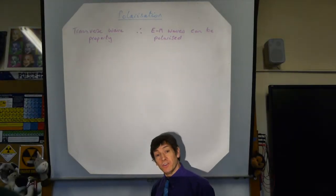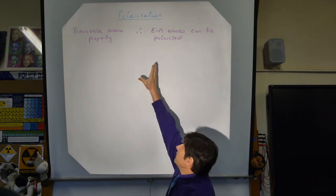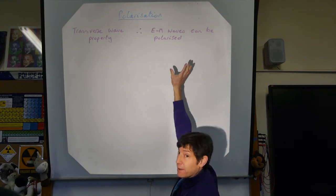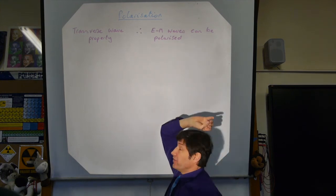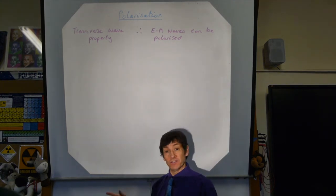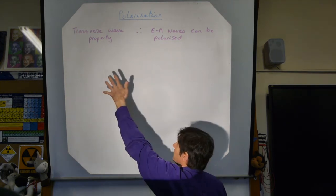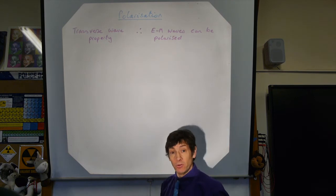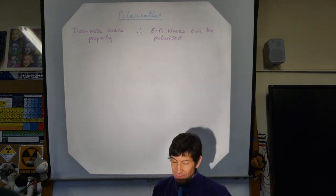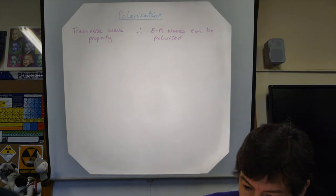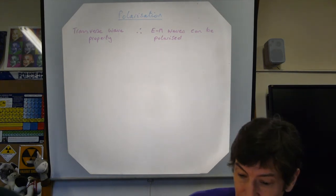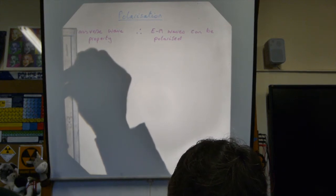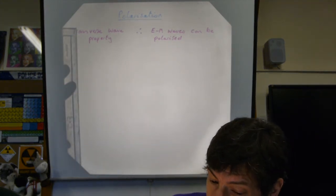What we're going to do now is a quick revision of polarisation. Electromagnetic waves can be polarised and therefore they must be transverse. Looking at it the other way around: transverse waves can be polarised, and if you can polarise electromagnetic waves, then they must be transverse. A quick reminder of what we mean by polarisation — then we'll look at polaroid filters and whether we can polarise other electromagnetic waves like radio waves or microwaves.